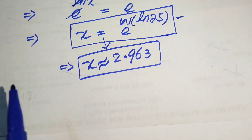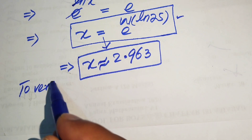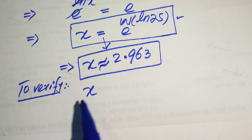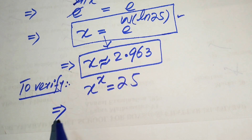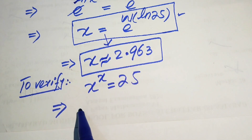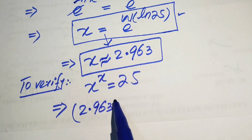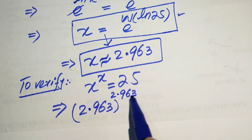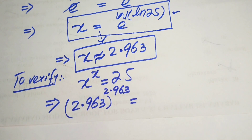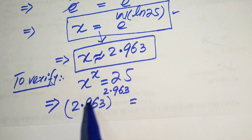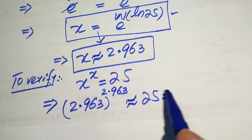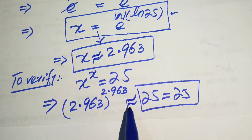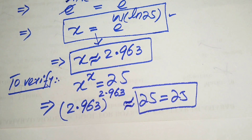To verify, we substitute x ≈ 2.963 back into the original equation: 2.963 to the power of 2.963, which using a calculator gives approximately 25. This confirms that our value of x satisfies the equation. Thank you for watching — please subscribe for more videos.